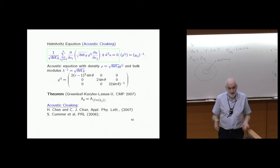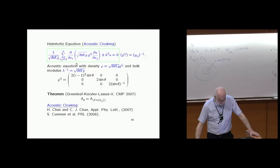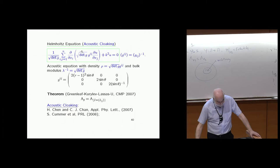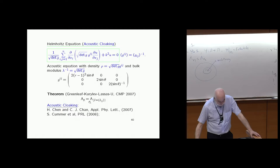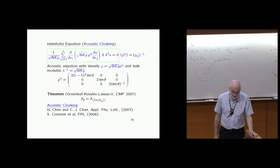You can do this for any equation invariant under changes of coordinates — for instance, Helmholtz equation. You take the Laplace-Beltrami operator with frequency k squared. This corresponds to the acoustic cloak — the acoustic equation. The physical meaning is no longer conductivity: it's an anisotropic density and a bulk modulus equal to the inverse of the square root of the determinant. The theory is that the Dirichlet-to-Neumann map equals the identity one, so you have acoustic cloaking.